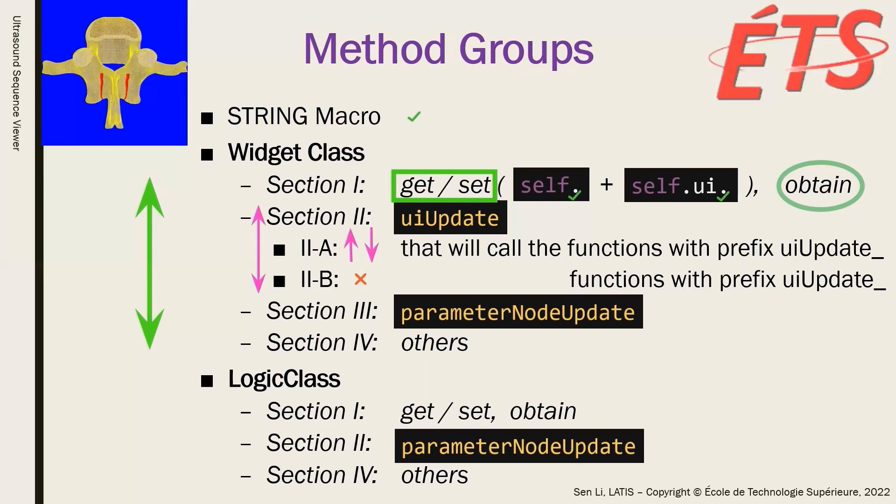Similarly, Section 3 contains the update of parameter node-related functions. In the end, Section 4 covers all the other functions. The only difference between the logic class and the widget class is that we don't have the update of user interface in the logic class.